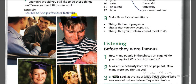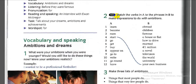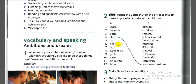For example: 'I wanted to be a professional footballer — yes, it was realistic, and now I am a professional footballer,' and so on. Next exercise: match the verbs in A to the phrases in B. These words should be matched to make expressions connected with being ambitious. For example, 'start your own business.' Pause and do this exercise.